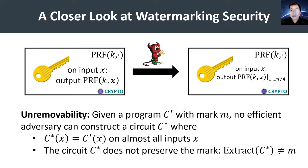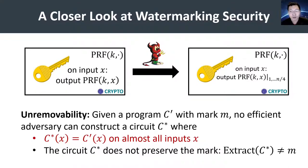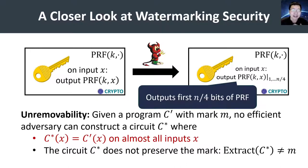The starting point of our work is to revisit the security definitions underlying these kinds of software watermarking schemes, especially in the setting of pseudorandom functions. Let us take a look at the unremovability requirement in greater detail. Under the current formulation of unremovability, we require security to hold against any adversarial strategy that preserves the functionality of the marked program. We capture this notion of functional equivalency by requiring that the adversary's program preserve the exact input-output behavior. So consider this setting in the case of a pseudorandom function, and consider an adversarial strategy that produces a program that only outputs the n/4 bits of the pseudorandom function.